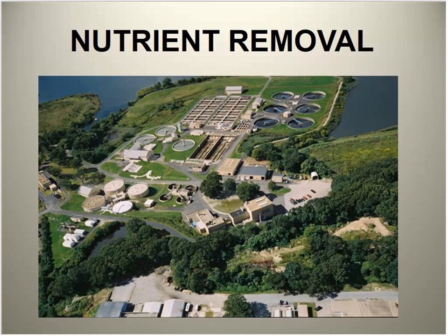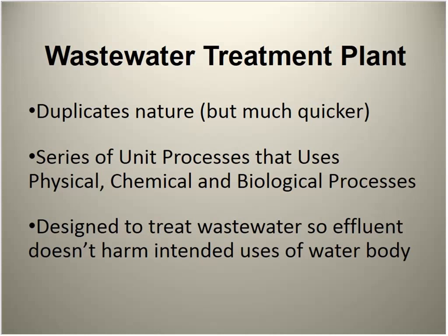Nutrient removal has been an increasing demand over the past 15 years or more — nitrogen and phosphorus are what we're referring to. Increasingly, particularly here in New England, Massachusetts is very hard hit with nitrogen removal. Phosphorus has also become increasingly important over the past five to eight years. Remember, we're largely doing what nature would do — it's largely a biological process, but to get to certain permit levels we do have to resort to some chemical usage.